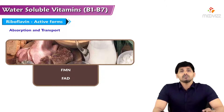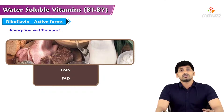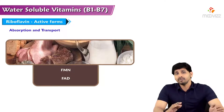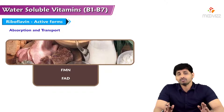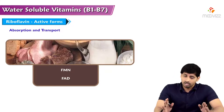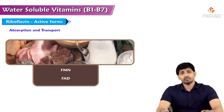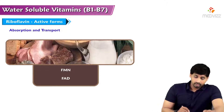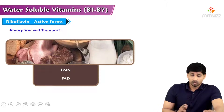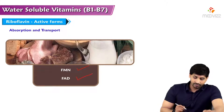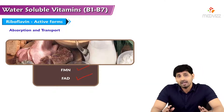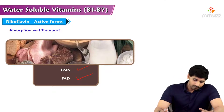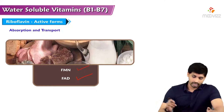Coming to the active forms of vitamin B2: similarly to B1 having a coenzyme active form (TPP), riboflavin has two active forms — one is FMN and the other is FAD. FMN is flavin mononucleotide and FAD is flavin adenine dinucleotide.